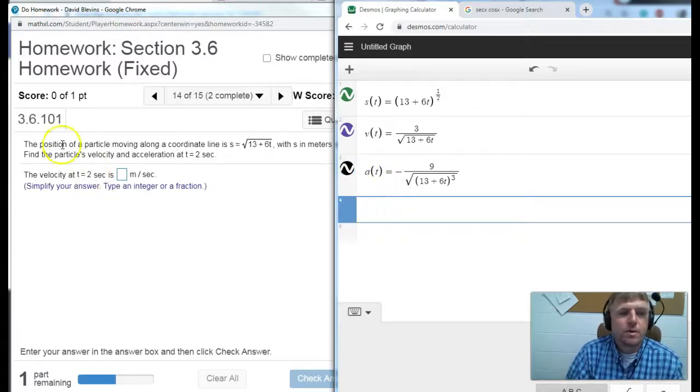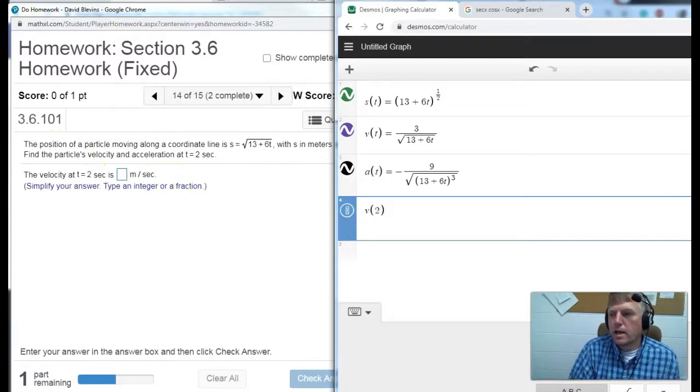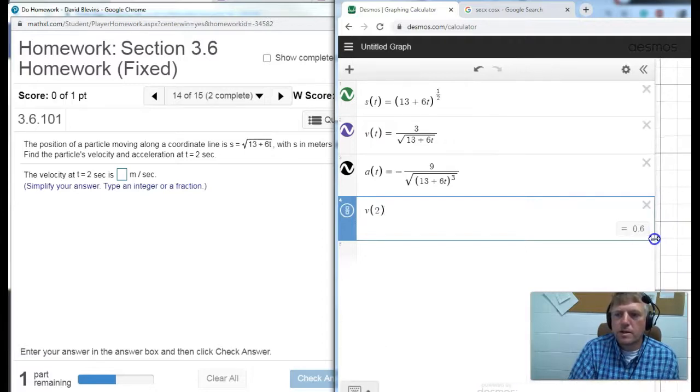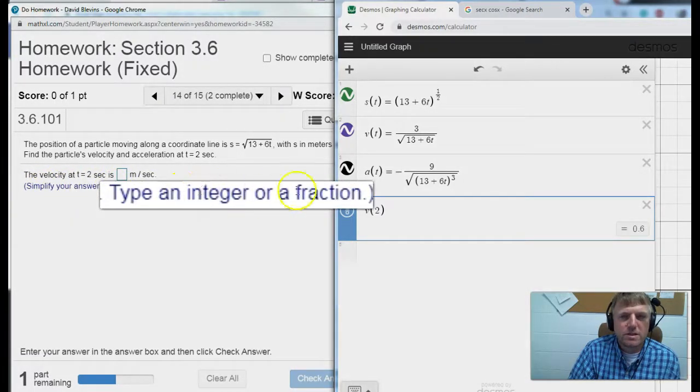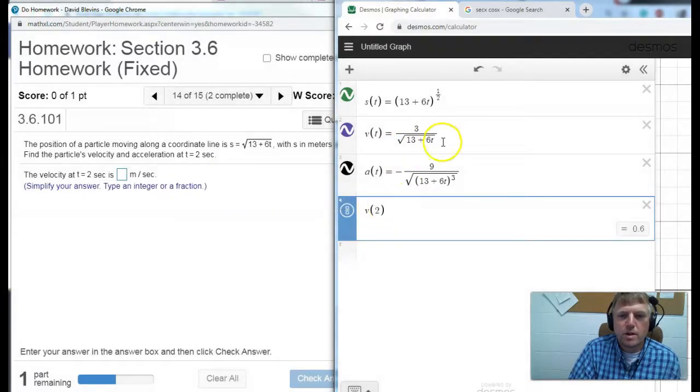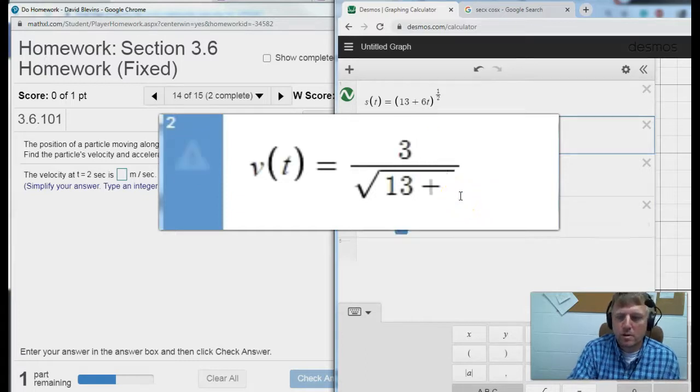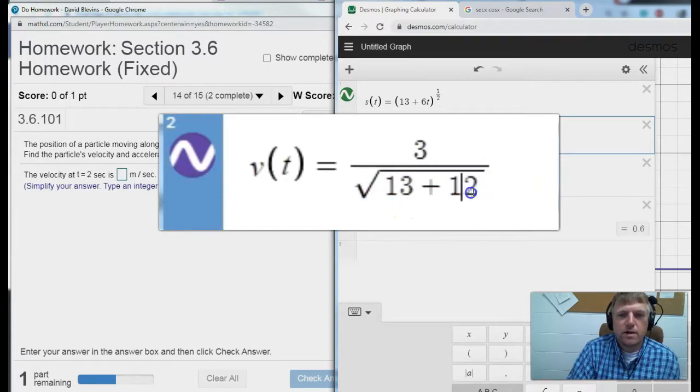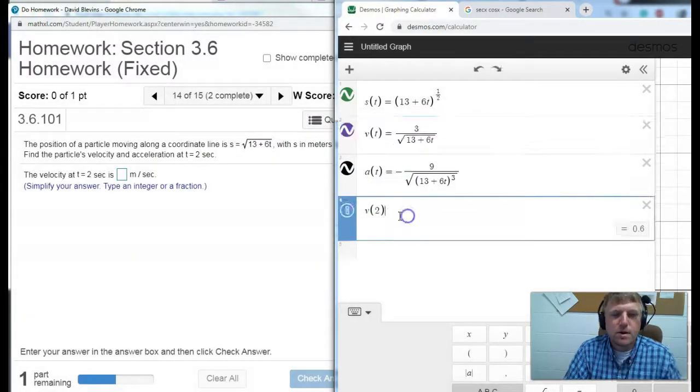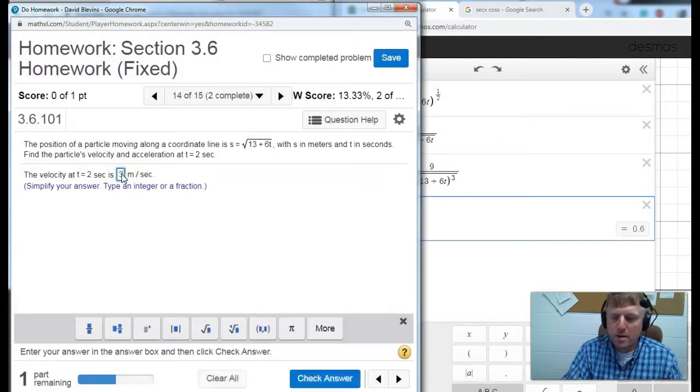And now I can plug in the velocity at t equals 2 is going to be v of 2. And I get v of 2 is 0.6 which is 3 fifths. And the reason why I'm saying it's 3 fifths is because it only gives me integers or simplified fractions. Now think about what's going on. We're plugging in 2 for this so this would be 6 times 2 would be 12, 13 plus 12 would be 25 underneath the radical and the square root of 25 is 5 so it's just 3 fifths. So I'm going to write it that way 3 fifths.